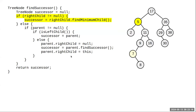Finding the next node: initialize the successor to null. If a node has a right child — for example, finding the successor of five — there must be something after it in the right subtree. Find the minimum of that right subtree by going left until you can't go further. That minimum is the smallest number greater than five, so it must be the successor. This is the simpler case: if there's a right child, find the minimum of that subtree.